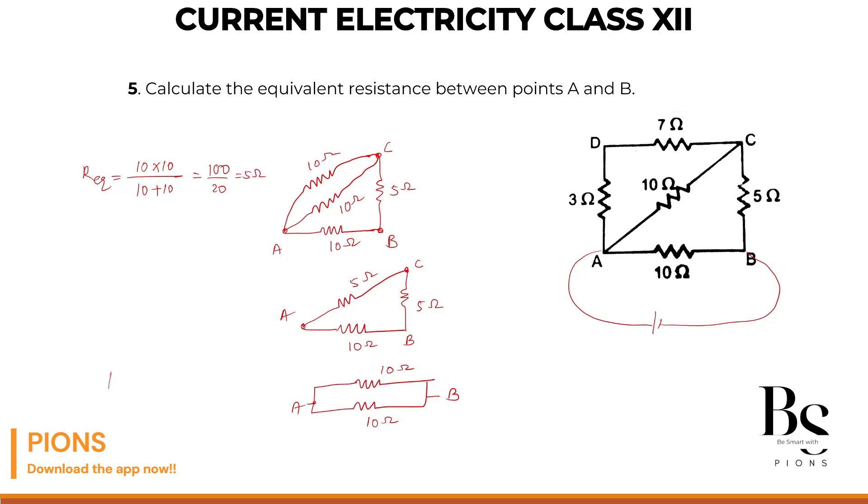Now 10 and 10 equivalent, that is our final one, will be 10 into 10. We have just now found at the beginning also, 10 plus 10, that is nothing but 100 by 20 which is 5 ohm. So what is the R equivalent between point A and B? 5 ohm.